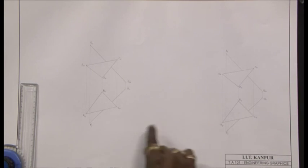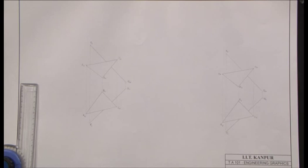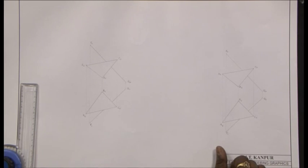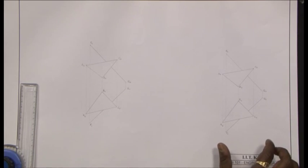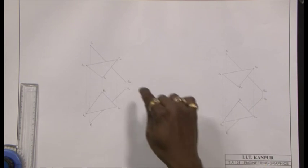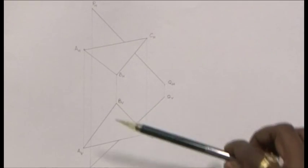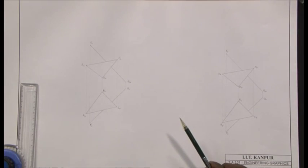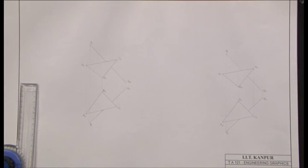If you notice, these are two identical pictures. We are going to be discussing two methods. One is the edge view method that will be working over here. The second one is the cutting plane method that will be working over here. Both these methods will help us determine the intersection point between the plane and line as well as the visibility of the line. Let us start with the edge view method, or the auxiliary view method, first.